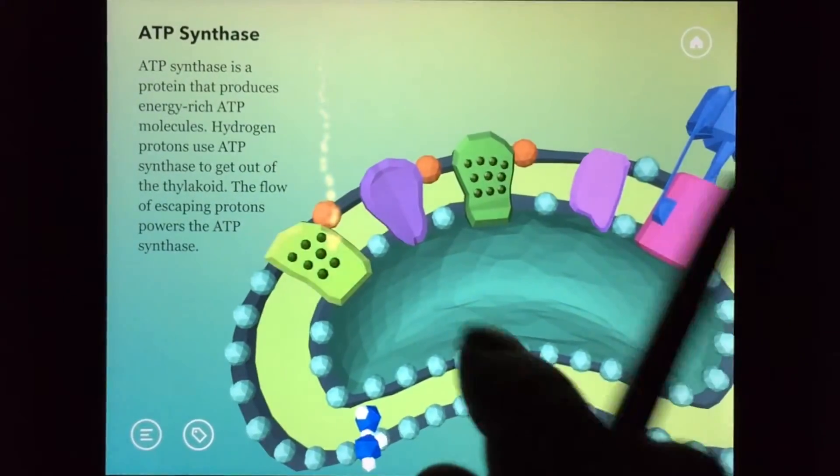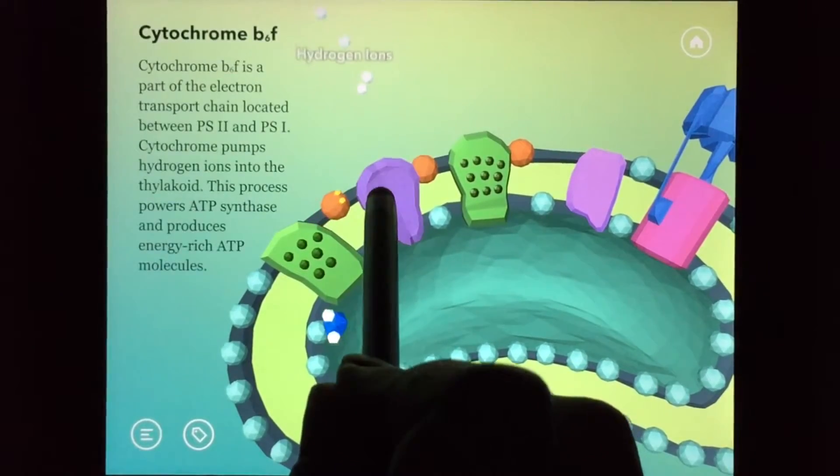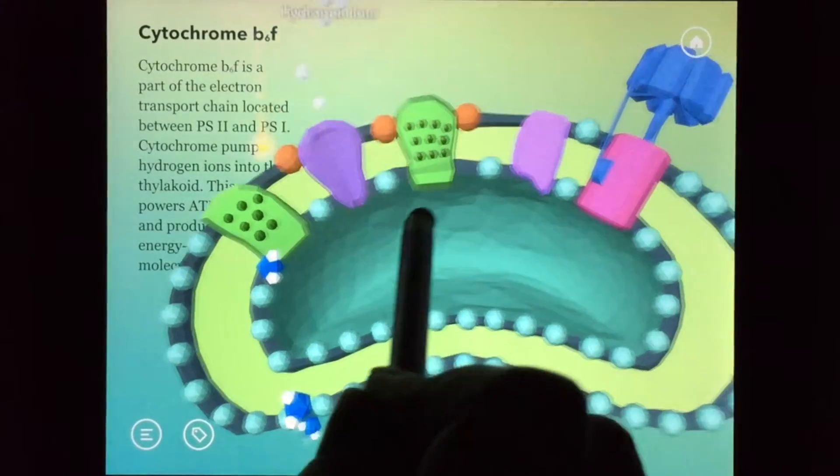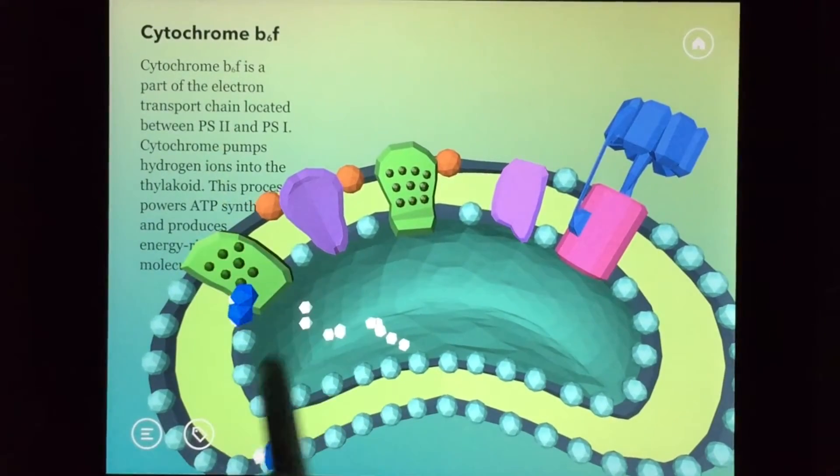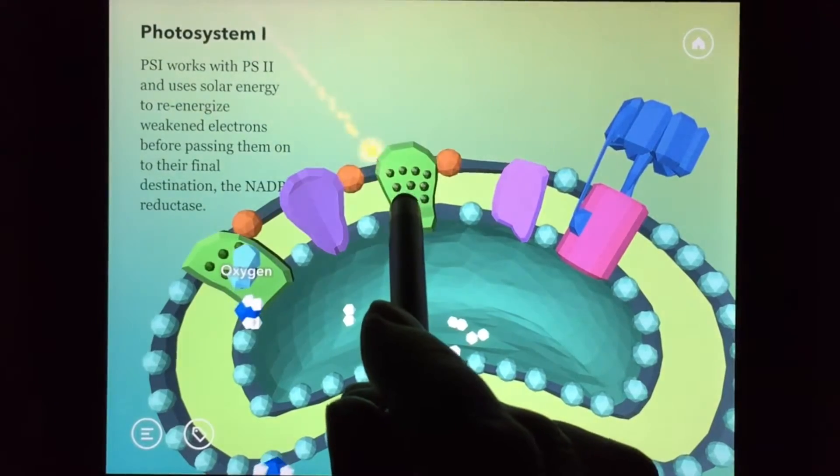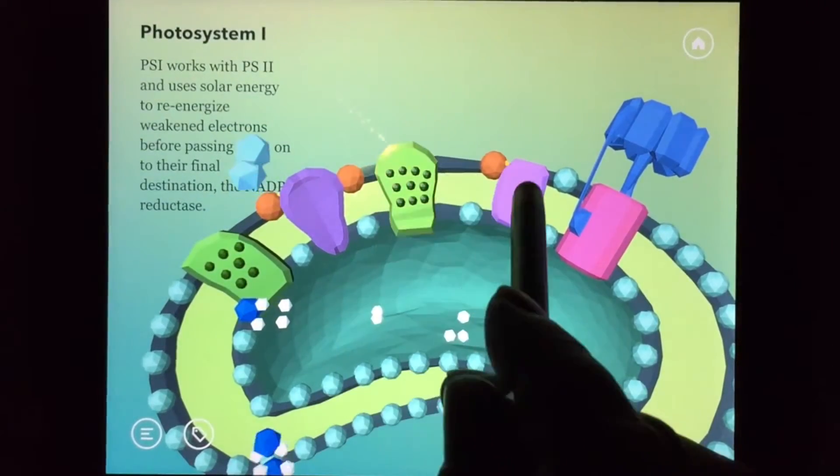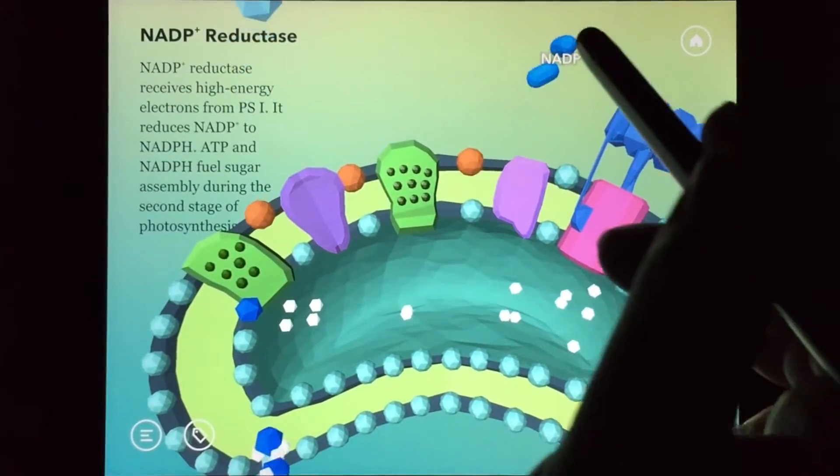Getting back to the electron transport chain, now we know that the energy from the electrons is used to pump hydrogen ions. When these low energy electrons are shuttled to photosystem 1, they are re-energized and are used to reduce NADP plus to NADPH.